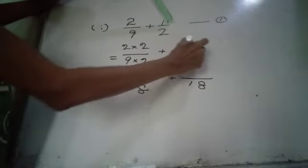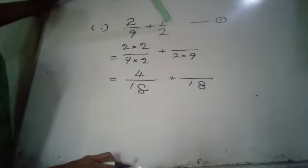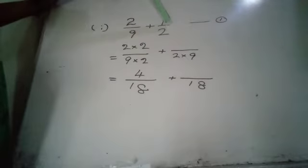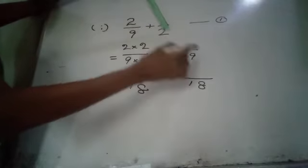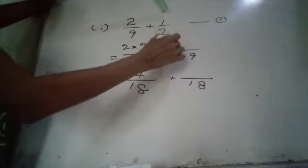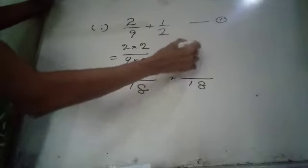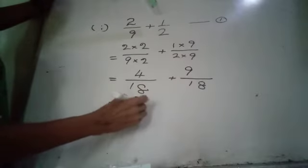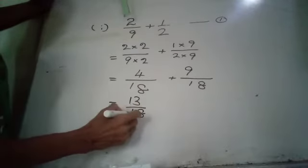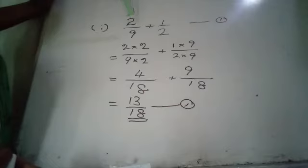When we find the equivalent fractions, both numerator and denominator are multiplied by the same number. For two-ninths, multiply both by 2: we get 4 over 18. For one-half, multiply both by 9: 1 times 9 is 9, giving 9 over 18. Then 4 plus 9 is 13, so the answer is 13 over 18.